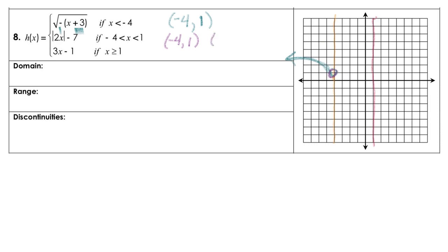Plugging in 1, we're going to have negative 5. So we go over to 1 and down 1, 2, 3, 4, 5 — and that is also an open circle. Think about the transformation: that is going to be a V, and it has been moved down 7. So there's the vertex, and we know that's going to be a V shape connecting there.